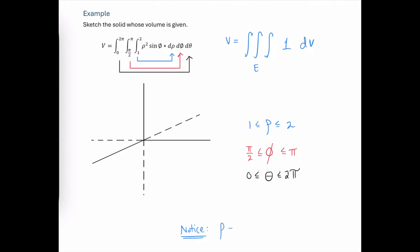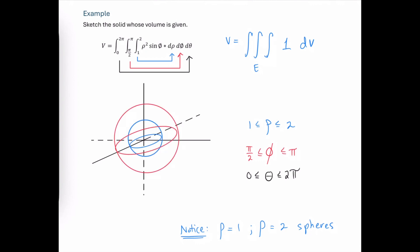The formula rho equal to 1 and rho equal to 2 will graph to give us spheres in three-dimensional space. Rho equal to 1 is a sphere of radius 1, and rho equal to 2 is a sphere of radius 2.